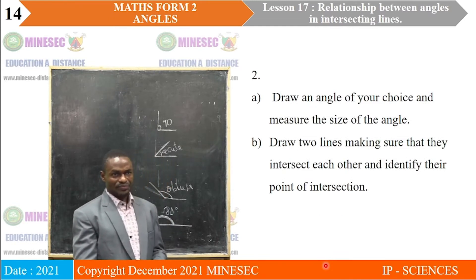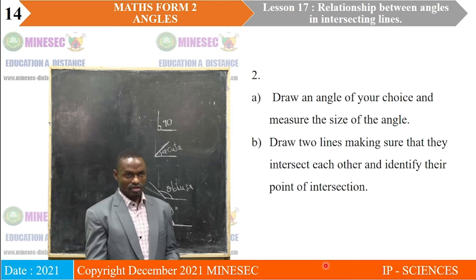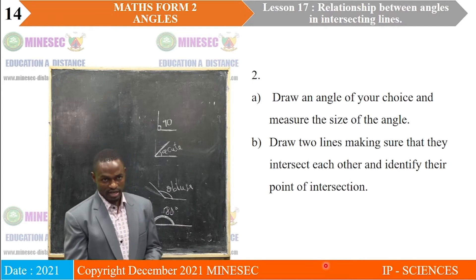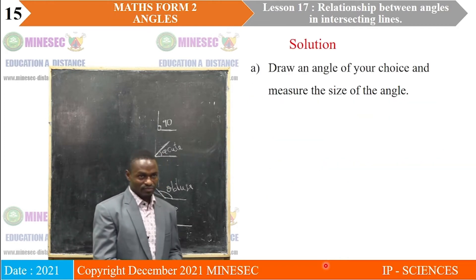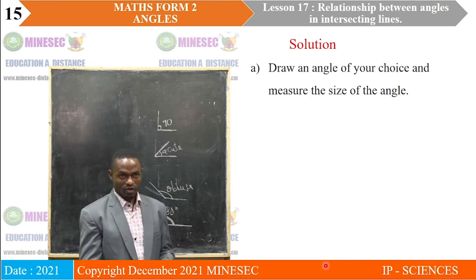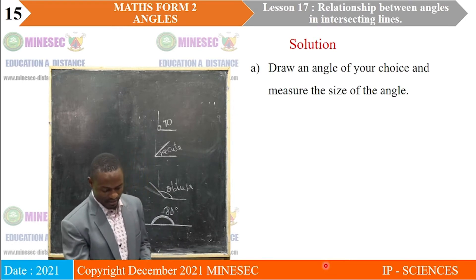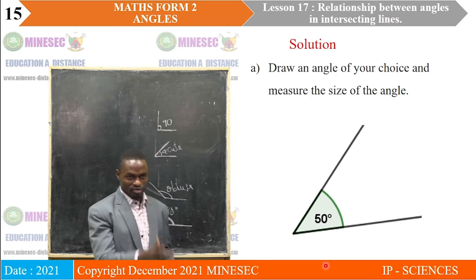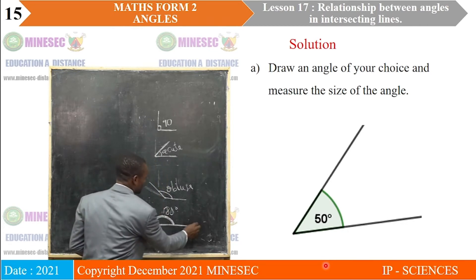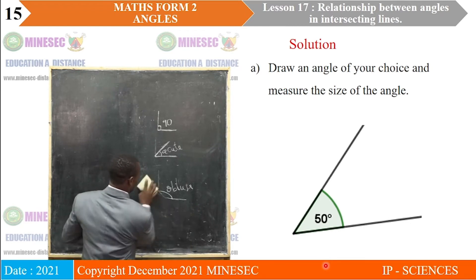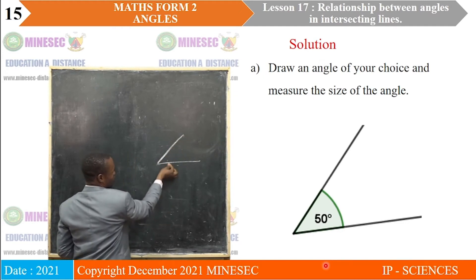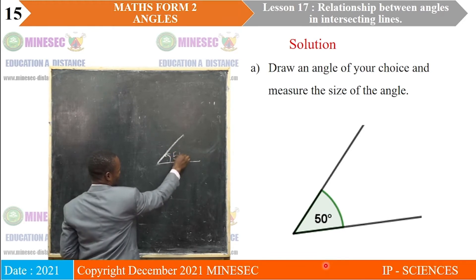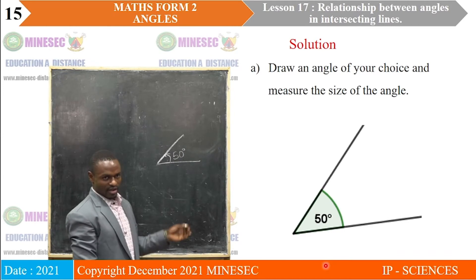Exercise two. Draw an angle of your choice and measure the size of the angle. Also draw two lines making sure that they intersect each other and identify their point of intersection. As a solution, here is an angle we've drawn. When you measure it using a protractor, you obtain 50 degrees.